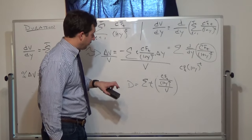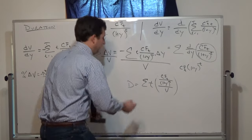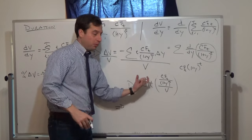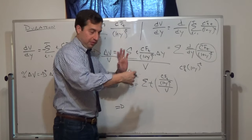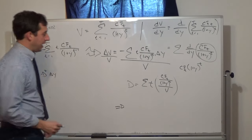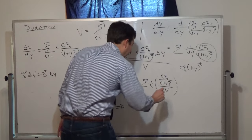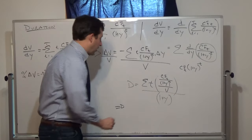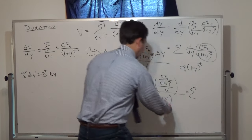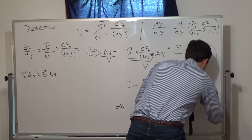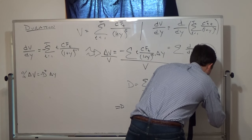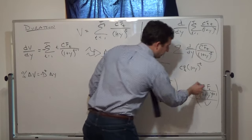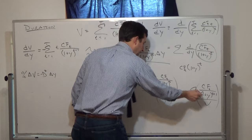If you define Macaulay duration that way, you can then note that because we defined duration for ease of teaching, we actually need the t plus 1 in the denominator — the derivative is the correct form. So we need to modify it. Before using this to get the percent change in the value of the bond, divide it through by 1 plus y. If you divide through by 1 plus y, this gives us the sum with t plus 1 in the denominator — cash flow at time t divided by 1 plus y to the t plus 1, all divided by V. So now D-star is this term, which is exactly what we have in the derivative.